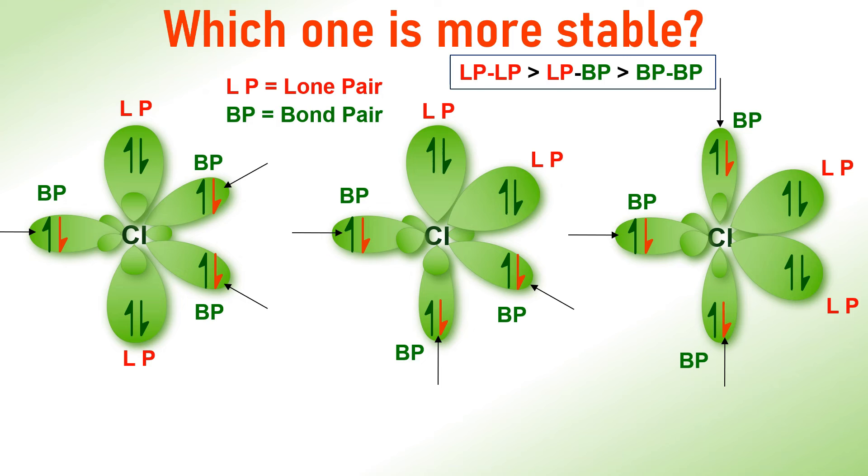Now, look at the arrangement on the left hand. The lone pairs are at 180 degrees. Whereas, in the middle one, they are at 90 degrees. And in the right one, the lone pairs are making an angle of 120 degrees.